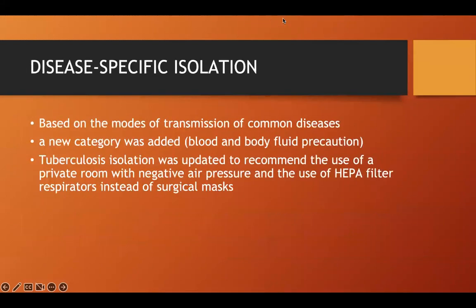Disease-specific isolation was established in 1983 to overcome issues in category-specific isolation. It was created based on the modes of transmission of common diseases, and a new category was added: blood and body fluid precautions. Tuberculosis isolation was also updated to recommend a private room with negative air pressure and HEPA filter respirators, instead of just surgical masks.